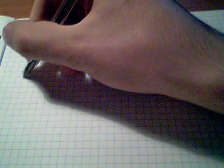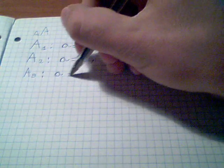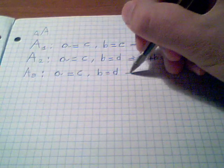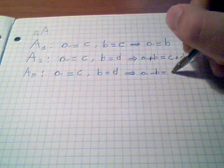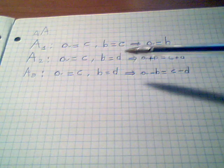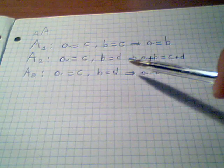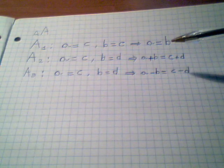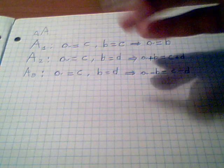Axiom number three, just like the second one, says that if A is equal to C and B is equal to D, then A minus B will be equal to C minus D. Of course Euclid didn't write the third axiom in this way because now I'm using algebra. He just says that if we subtract same things from same things, the remainders will be equal to each other.